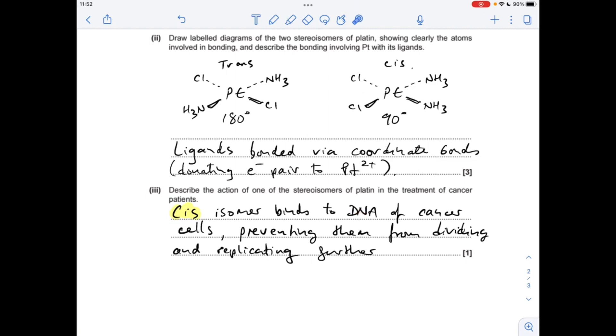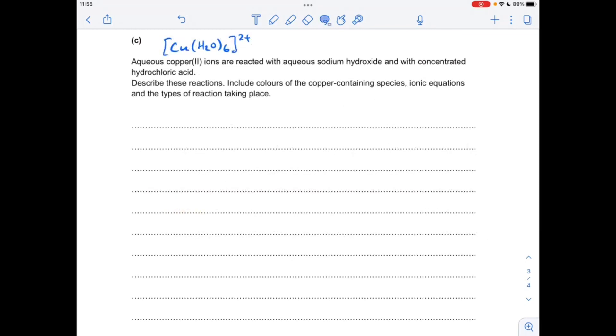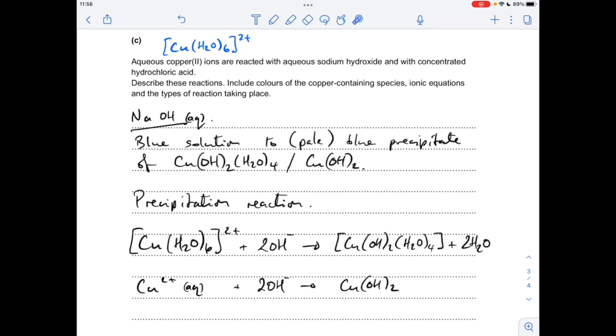The big seven marker to finish. You'll notice I've written up there the complex ion that is present in all aqueous copper two ions, that's the hexa-aqua copper 2+ ion. I've used a blue pen there for that because it is blue. What are we going to see? We'll start with the sodium hydroxide reaction.